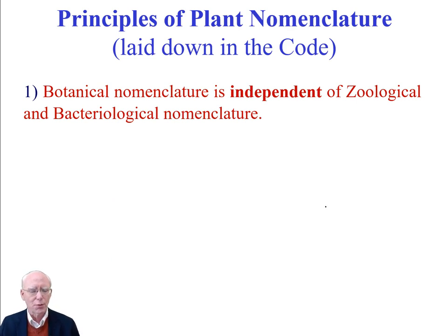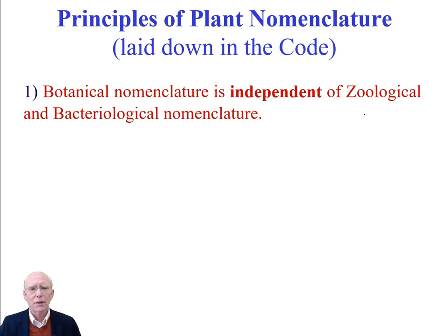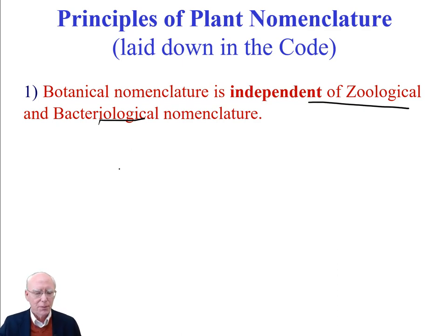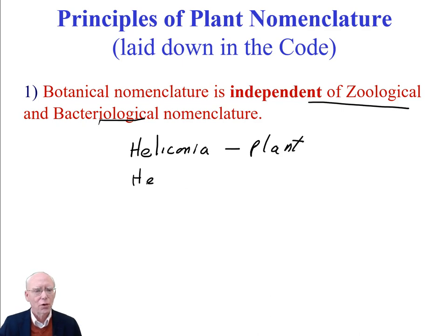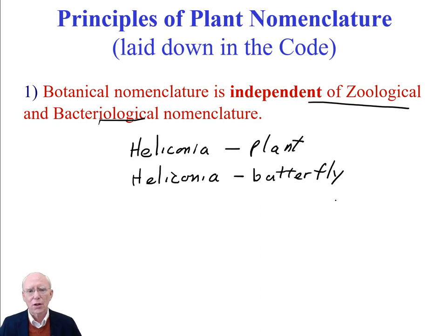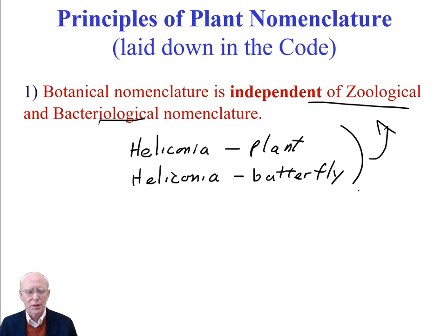What are the basic principles? The first one is that botanical nomenclature is independent of zoological and bacteriological nomenclature. The practical effect is that we can have a genus of plants called Heliconia and also a genus called Heliconia that is a butterfly. This is a real example — there really is a Heliconia plant and a Heliconia butterfly, and that's allowed, because the zoological and botanical nomenclatures are independent of each other.